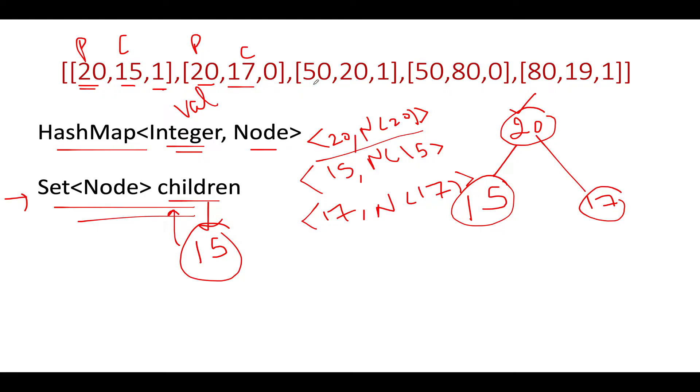Next what we are going to do is simply attach 20's right to 17. Let's proceed ahead. Next we see is 50 as parent, child as 20, and this is a left child. Do we see 50 in my hash map? No, it's not there, so we'll go and create 50. Then we will check whether 20 is part of the hash map. 20 is part of the hash map, so we'll re-utilize this value. We created the new node 50 and we extracted a child node from the hash map. We're gonna attach parent's left to 20, so parent happens to be 50, we'll attach its left to 20.